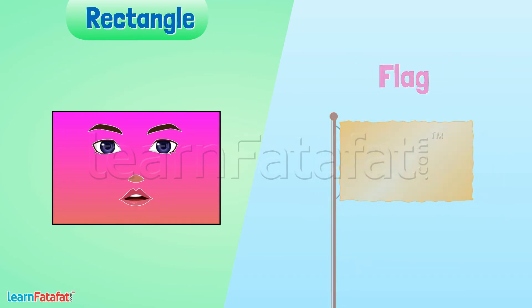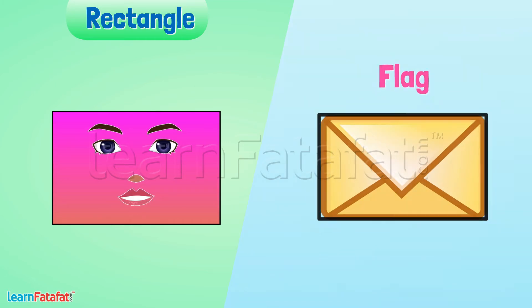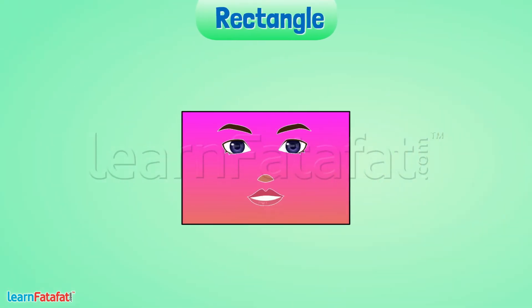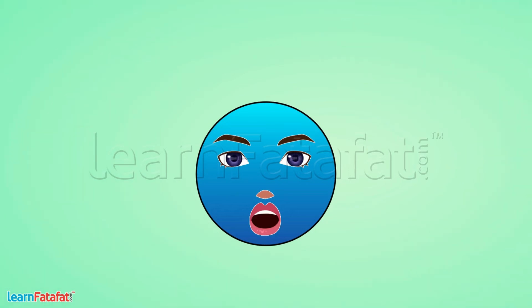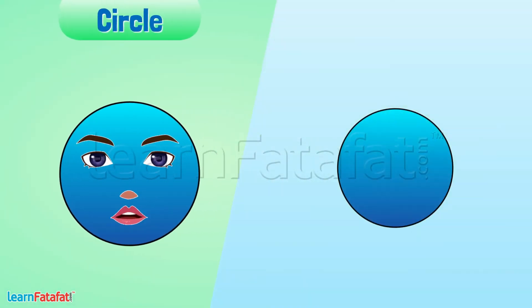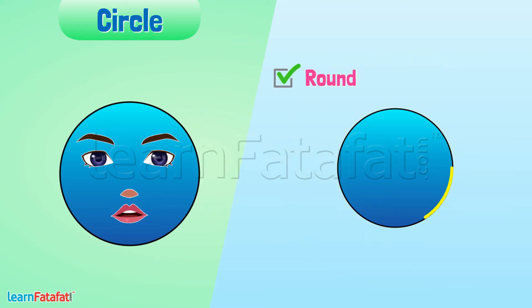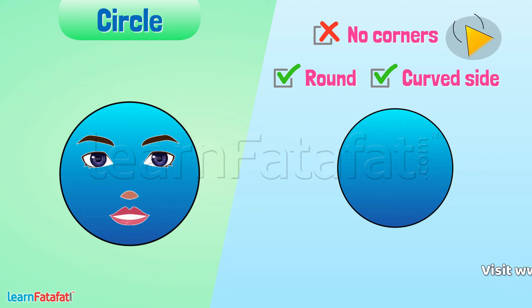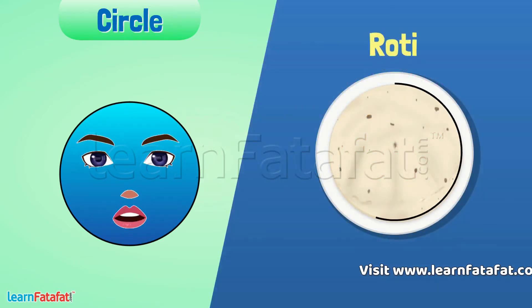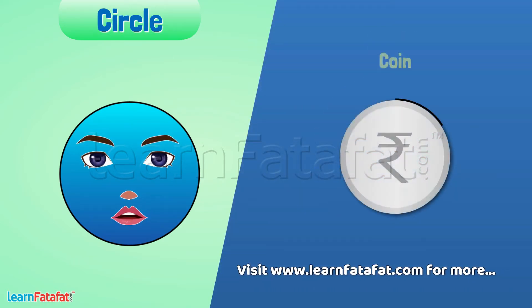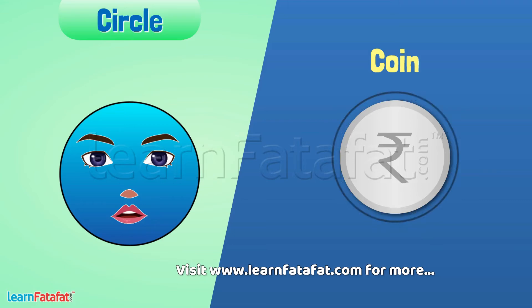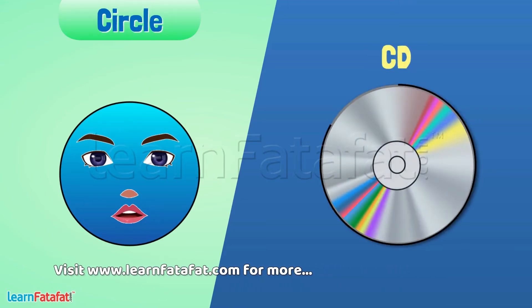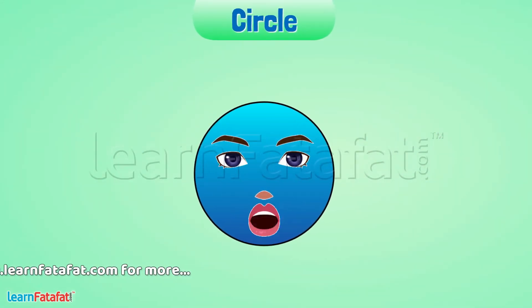I am a circle. I am round and I have a curved side. I don't have corners. You can see me in roti, coin, CD, and everywhere surrounding you.